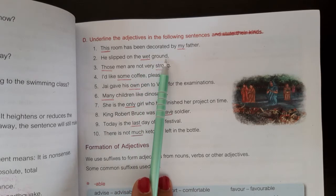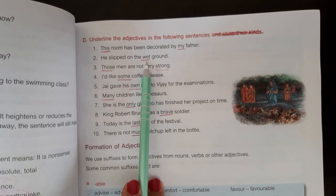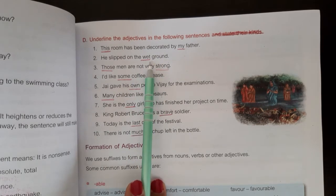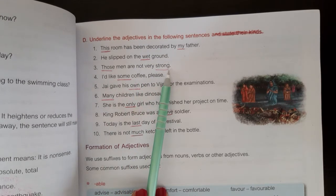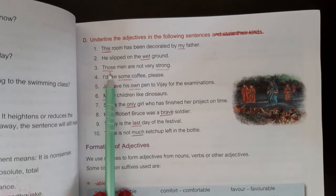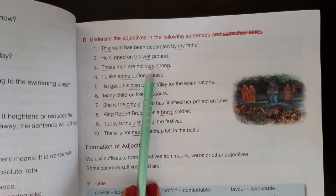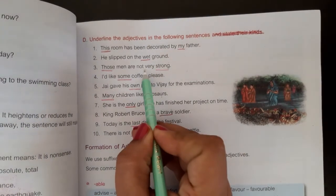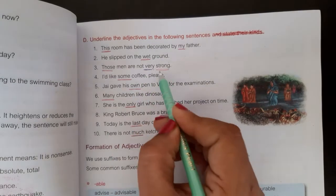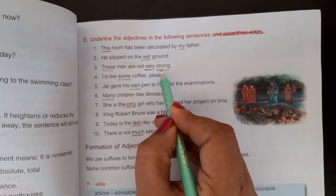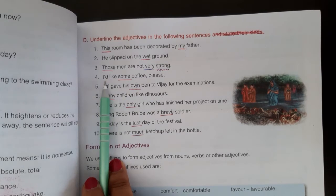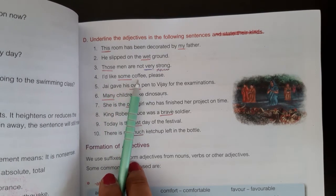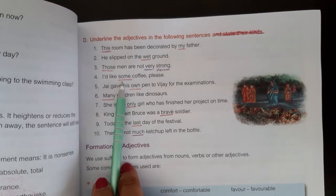'He slept on the wet ground.' 'Wet' is the adjective. 'Those men are not very strong.' 'Those' is the adjective and 'very' is the adjective. 'I would like some coffee.' 'Some' is the adjective.